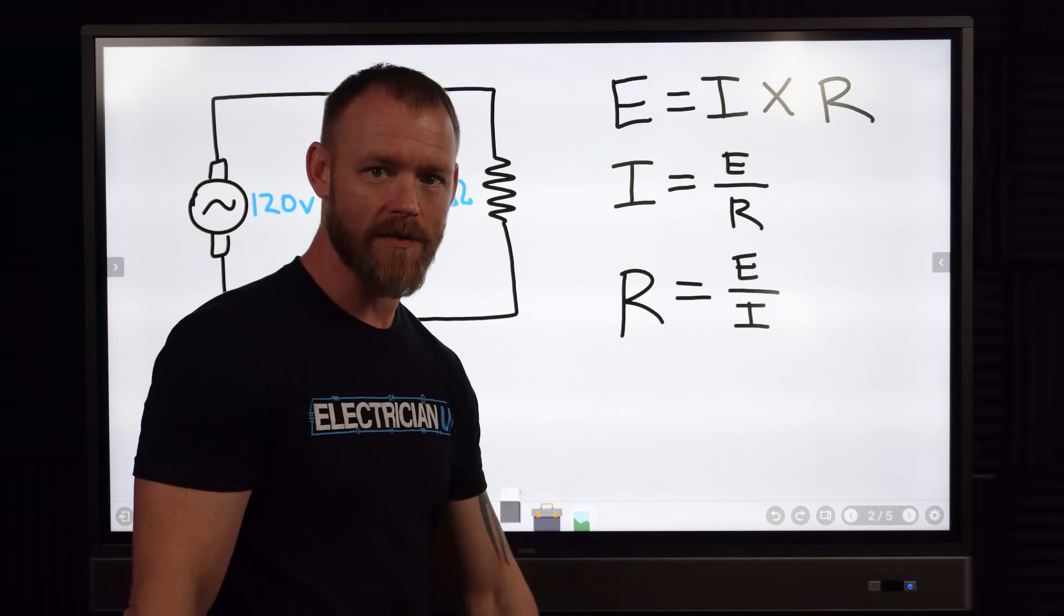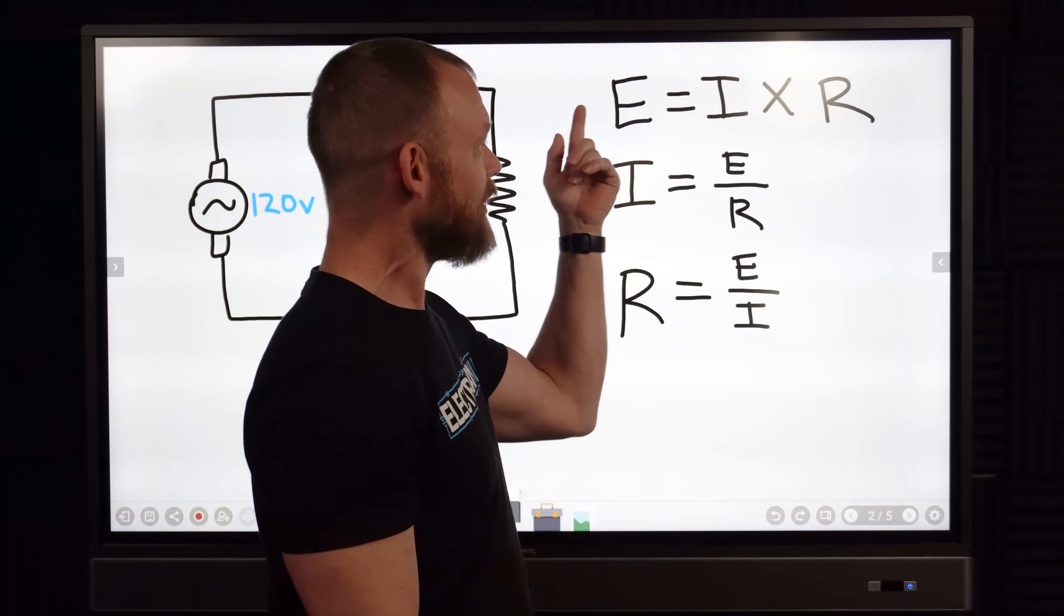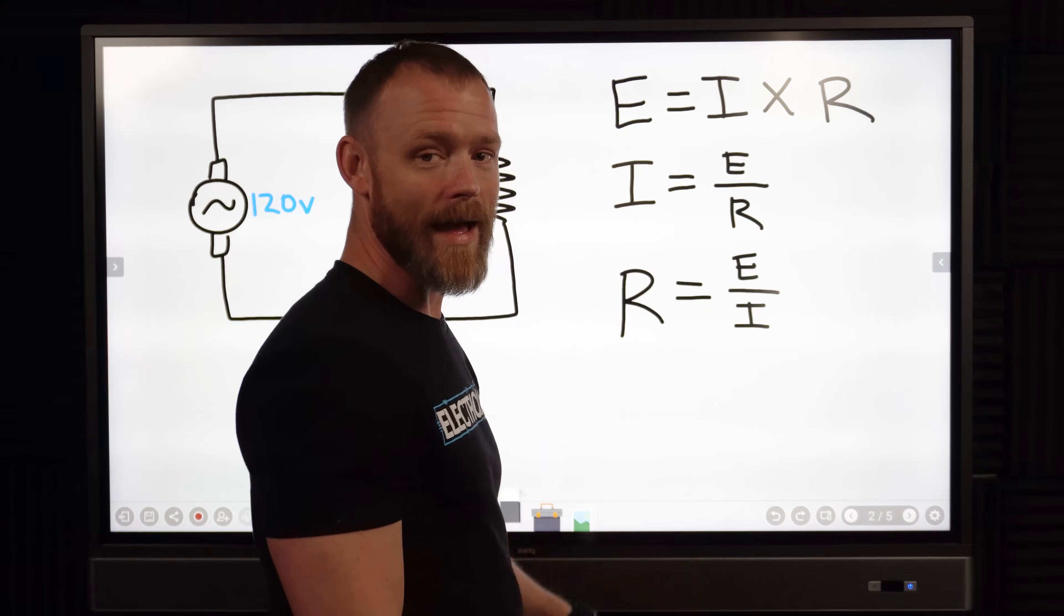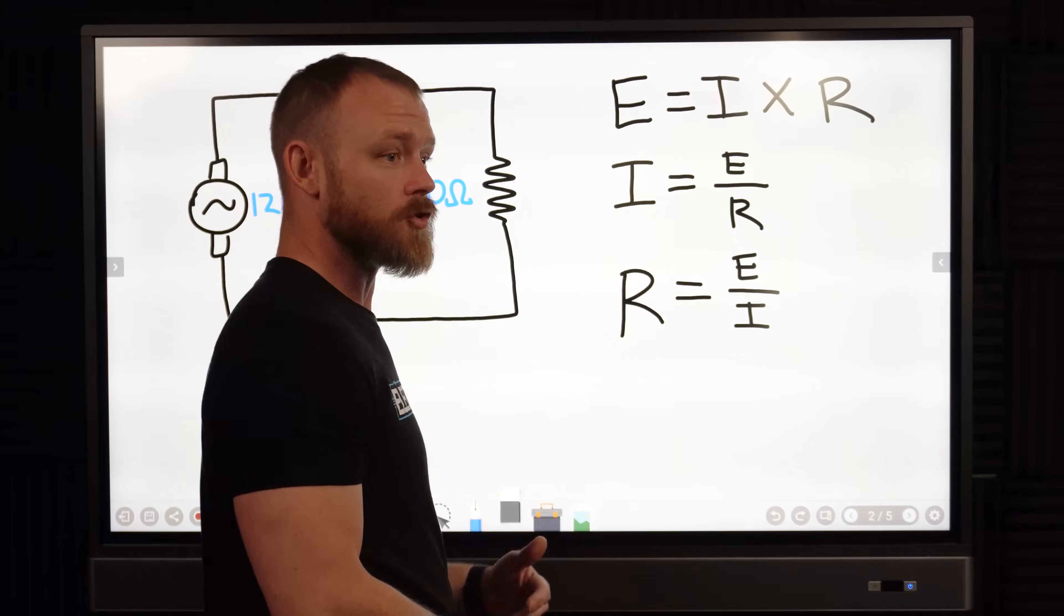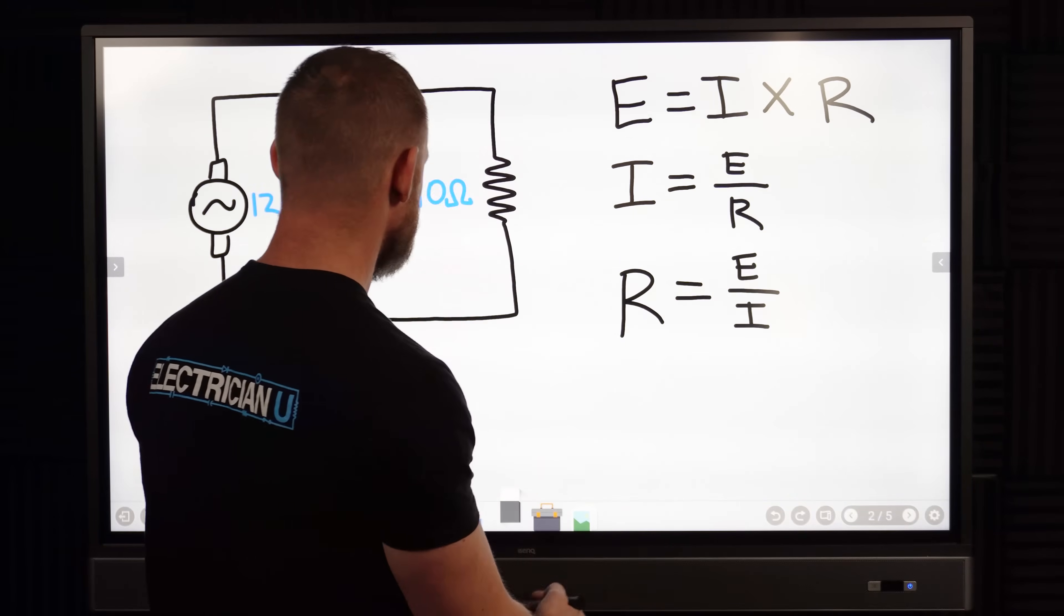If you're ever sitting there in a test or in a class and you're trying to figure out, damn it, what was the formula I know this one but I don't know how to make it like that, just remember that you're dividing by the value that you're trying to get rid of on both sides.